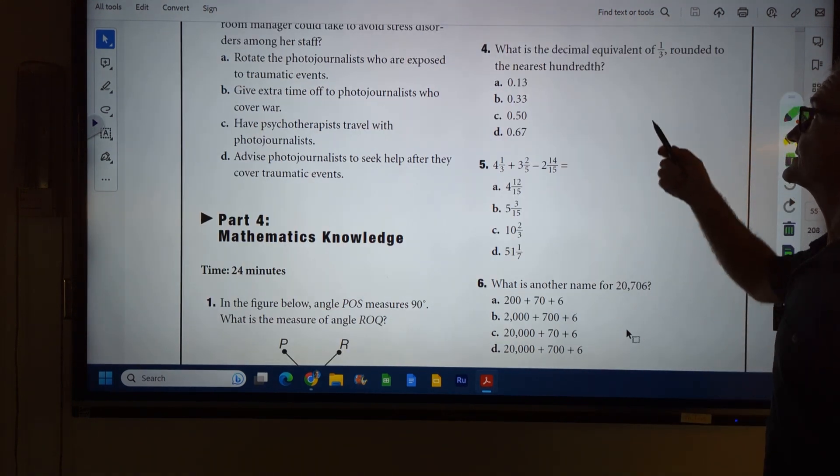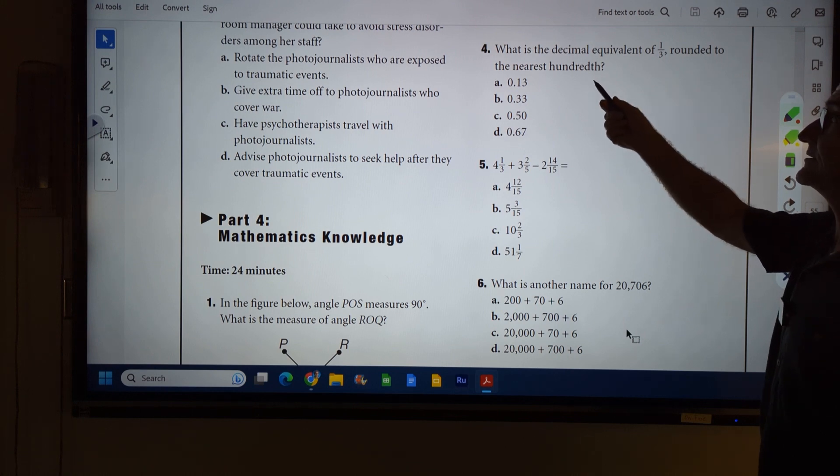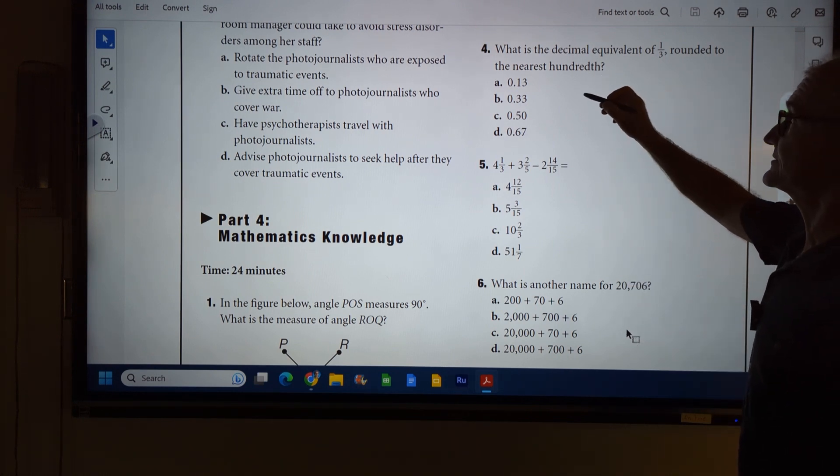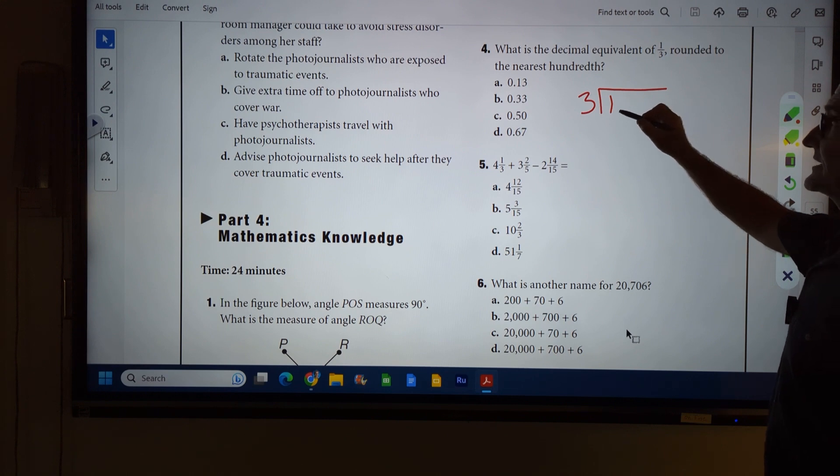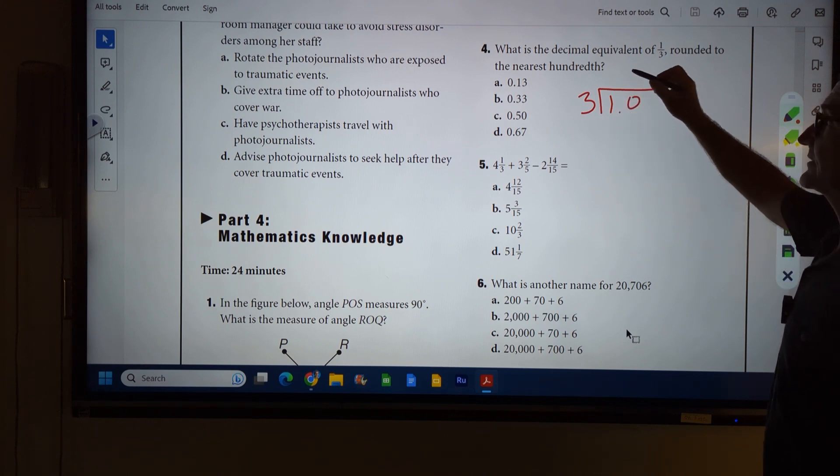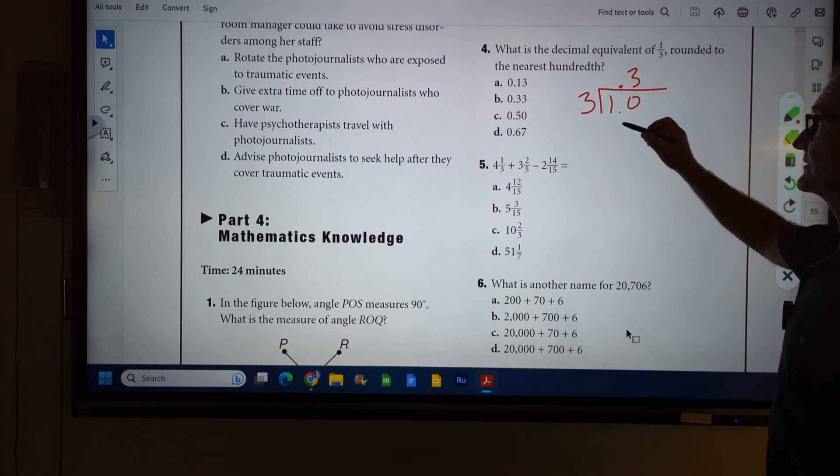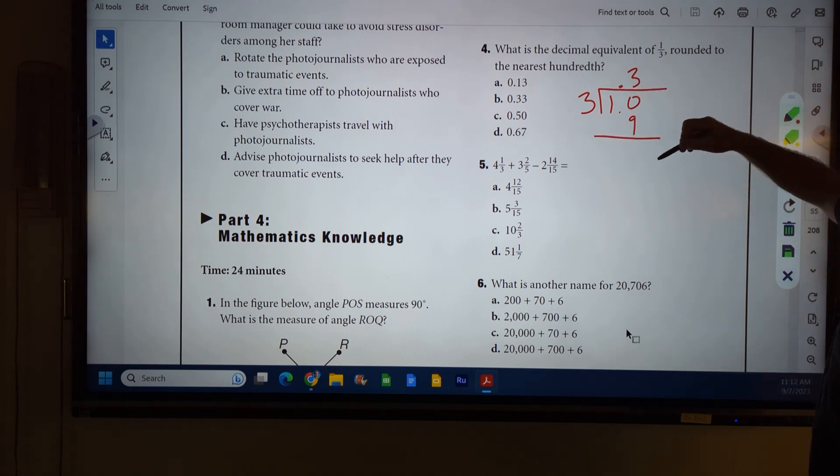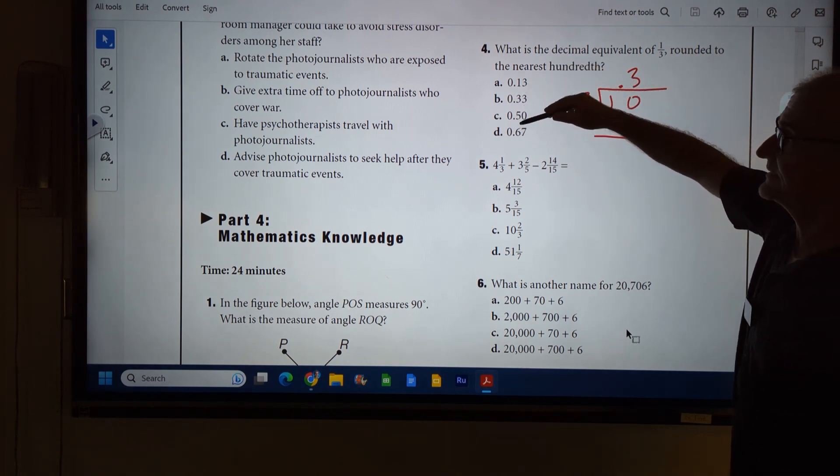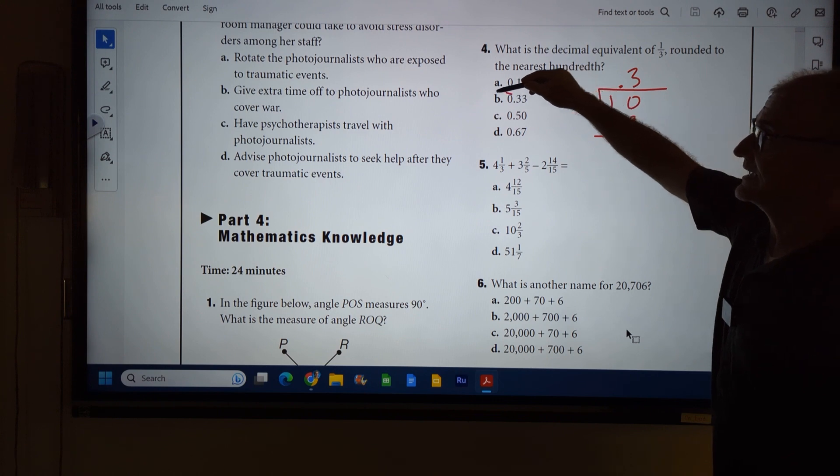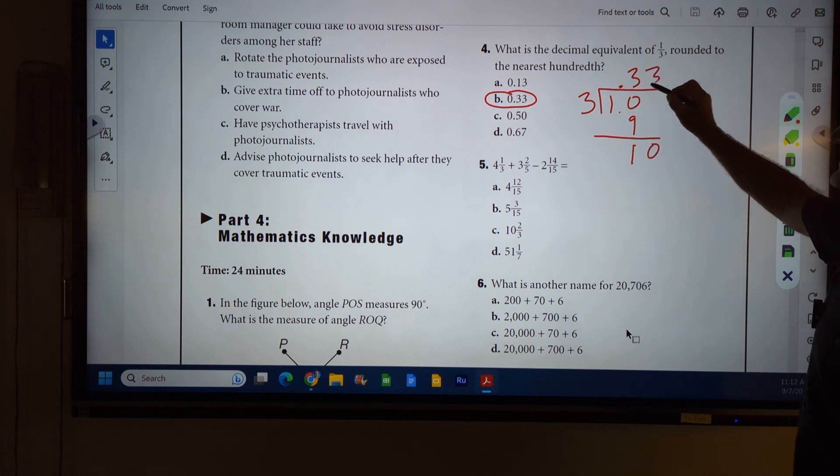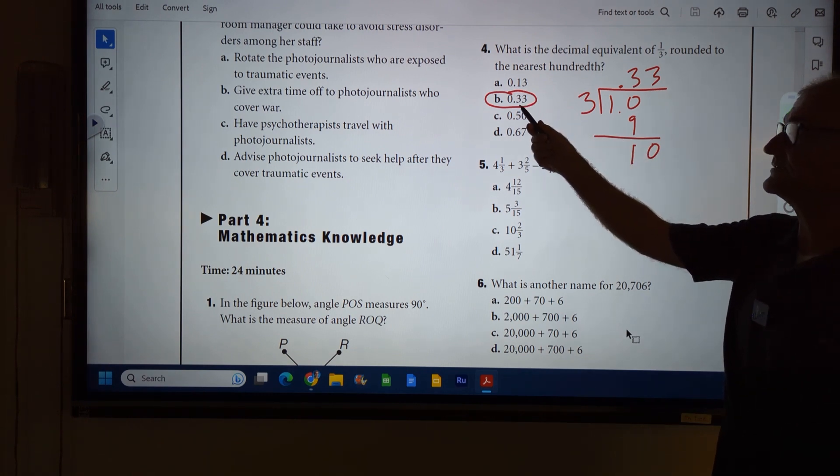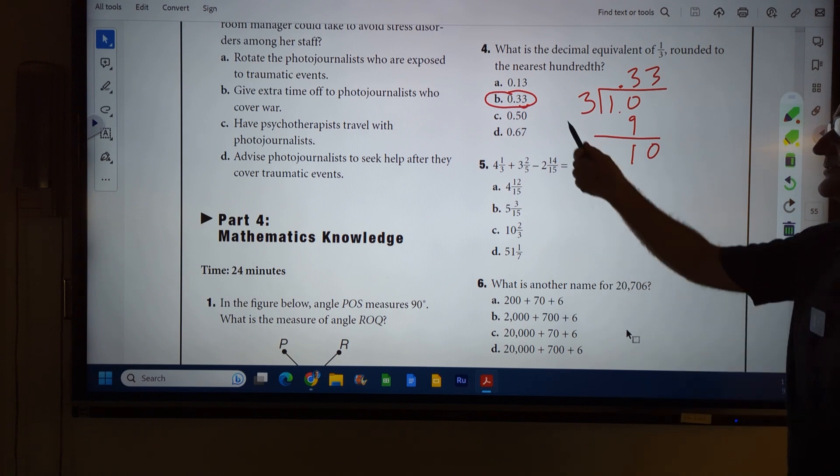Number four. What is the decimal equivalent of one-third rounded to the nearest hundredths place? So this is going to be similar. I'm going to go three into one. It doesn't go into one, so I've got to put a decimal there. Three into ten, it goes in there three times. That's going to give me nine. I could probably stop right there. There's only one solution here that has a point three in it, so it has to be answer B. Or if I want to keep going, ten minus nine is one. Bring down the zero. Three into ten, three times. I want to do the hundreds place. This is the tens place. This is the hundreds place. Correct answer, B.